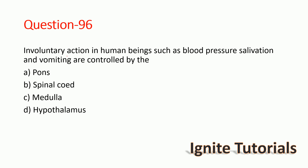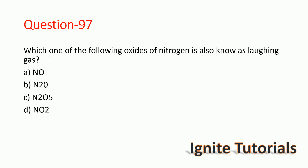Question 95: Involuntary actions in human beings such as blood pressure, salivation, and vomiting are controlled by what? They are controlled by the medulla — option C is the correct answer.